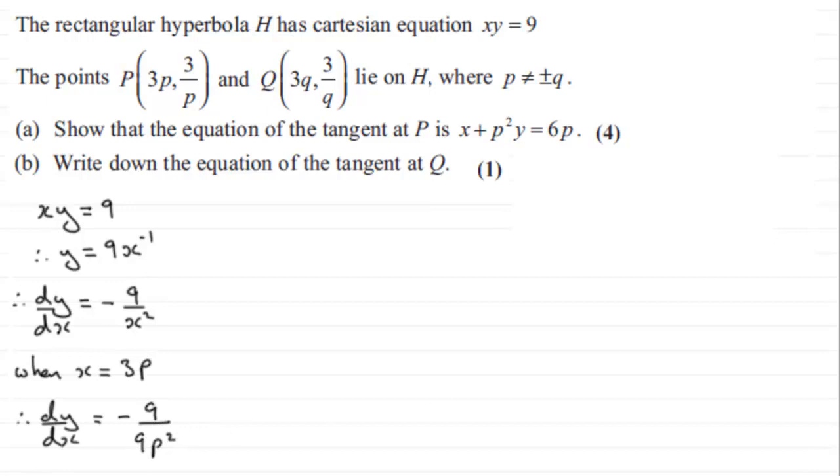So clearly we can simplify this because those two 9's cancel, let's just cancel them out here. So what we get is therefore DY by DX equals minus 1 over P squared.